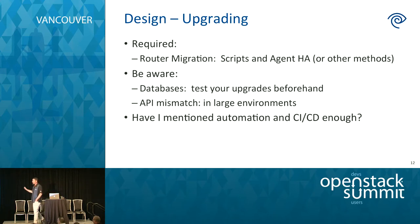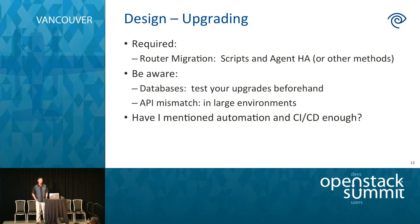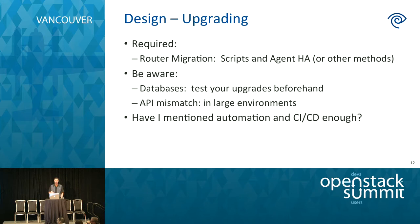When designing your Neutron implementation, make sure you design upgrading as part of your design process. It is a pain point in OpenStack overall. Once the network goes out, you have big problems. You need to really think about how you're designing your system, have your CI/CD in place, and test things as much as possible. Set up your development environment so that when you go to production, you're not causing user outages.